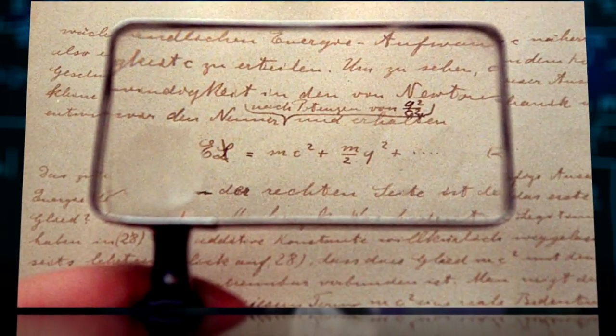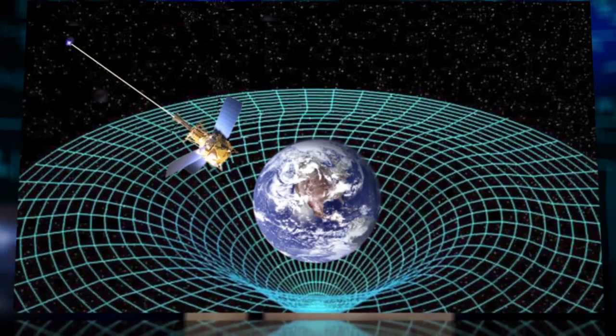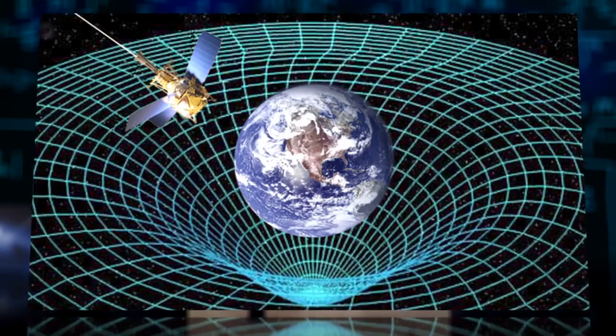Scientists keep trying to prove Einstein wrong, and they keep failing. Einstein's general theory of relativity states that objects with mass cause a curvature in space-time, which we perceive as gravity.